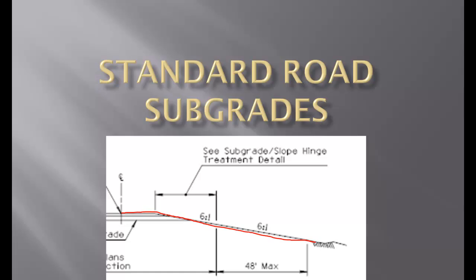There's no shoulder, and the road grade is 2% for the crown of the road, and then runs through a 6 to 1. You'll see that there is some paving and then some rock underneath. This is what we consider a standard road subgrade.